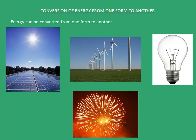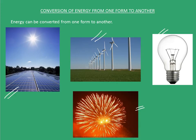Now, we move on to conversion of energy from one form to another form. Energy can be converted from one form to another. In this picture, solar energy is converted into electrical energy using solar cells. In the second picture, wind energy is converted into electrical energy using wind turbines. The third picture shows how electrical energy is converted into light energy and heat energy by an incandescent bulb. And the last picture shows how chemical energy is converted into light energy, heat energy, and sound energy.